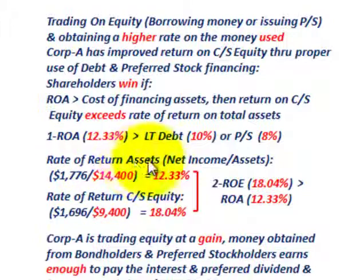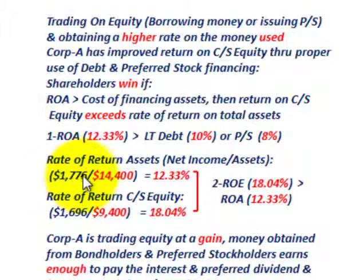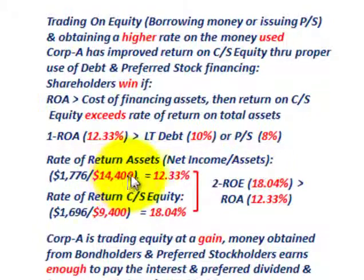The rate of return on assets is simply net income divided by total assets. Net income here is $1,776,000 — before the preferred stock dividend — divided by assets of $14,400,000, giving us 12.33%. This is indeed greater than both the long-term debt rate of 10% and the preferred stock dividend rate of 8%.